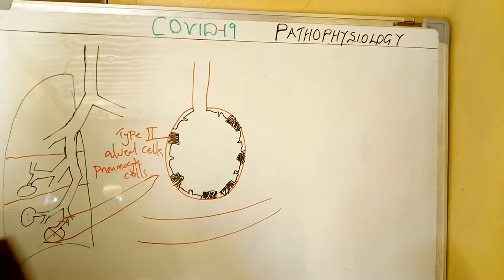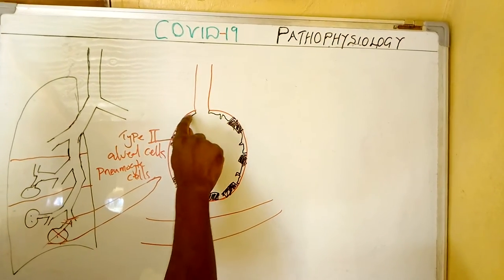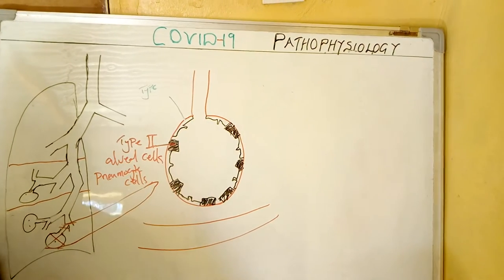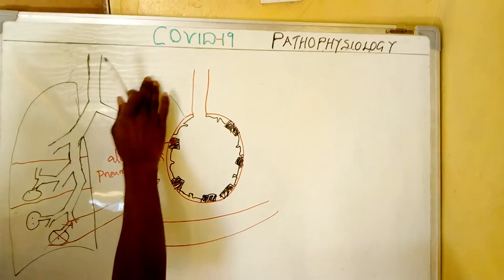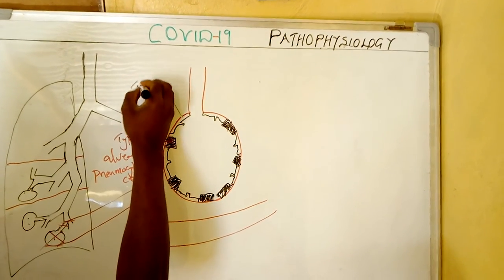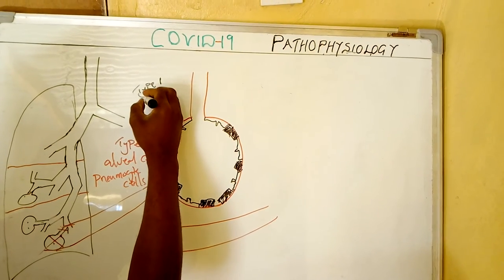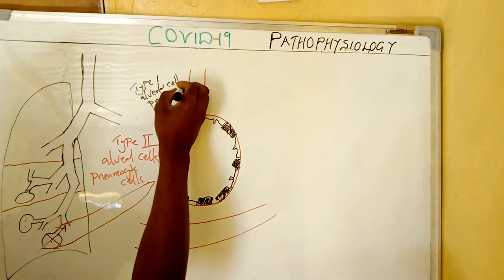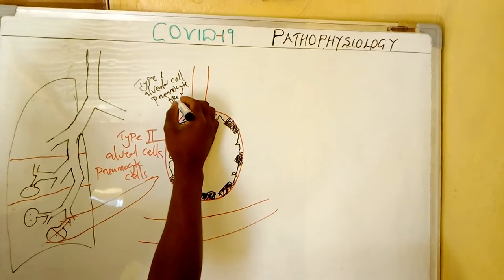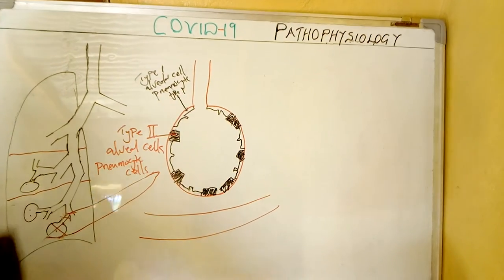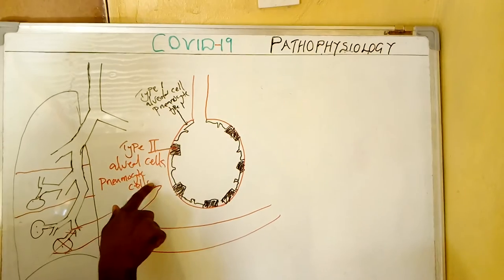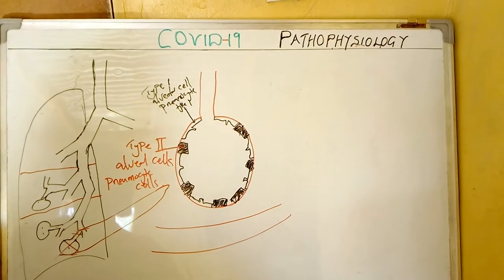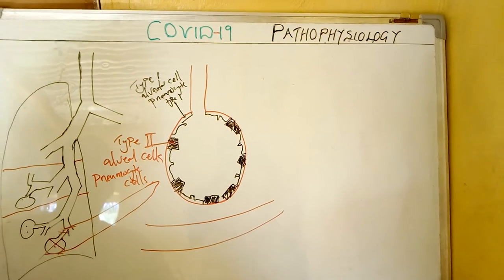The unshaded cells are what we are calling as type 1 alveolar cells or pneumocyte type 1. So we have got type 2 pneumocyte cells or alveolar cells, as well as type 1 alveolar cells or pneumocyte cells. Inside the alveolar cell, we also have the macrophage.